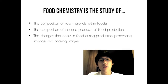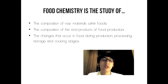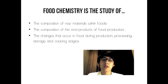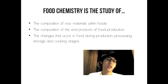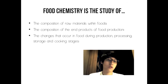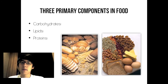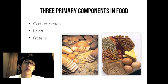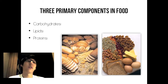Food chemistry is the study of the composition of raw materials within foods, the composition of the end products of food production, and the changes that occur in food during production, processing, storage, and cooking stages. The three primary components in food are carbohydrates, lipids, and proteins.